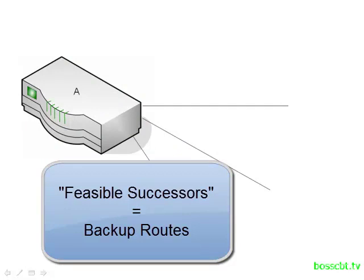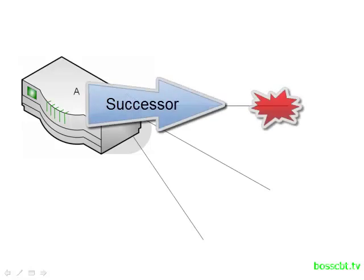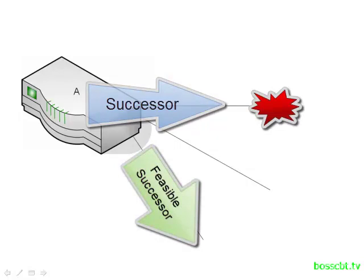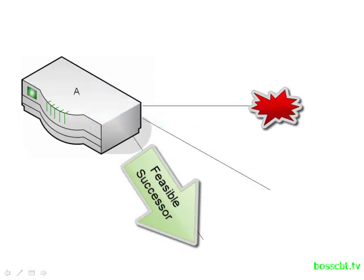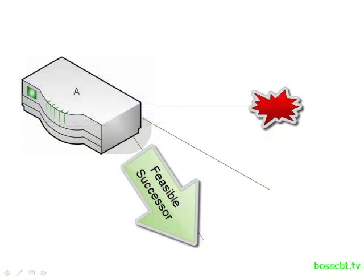It's called a feasible successor because it's feasible that it can replace the successor route should it fail. Fast convergence is achieved because a backup route is kept on hand, ready for use, and no computations are needed when a failure occurs. Remember OSPF has to rerun the Dijkstra algorithm on the new topology database? That doesn't happen here because the backup is already known to the router — this takes about one or two seconds. As soon as the successor dies, router A knows the feasible successor and puts it right into the route table. There's very little CPU load as well. That's the behind-the-scenes magic of EIGRP when it has multiple routes to a single destination.